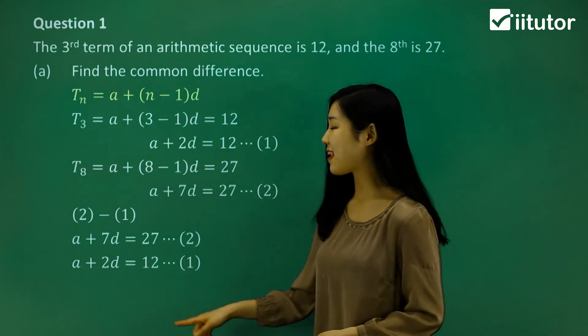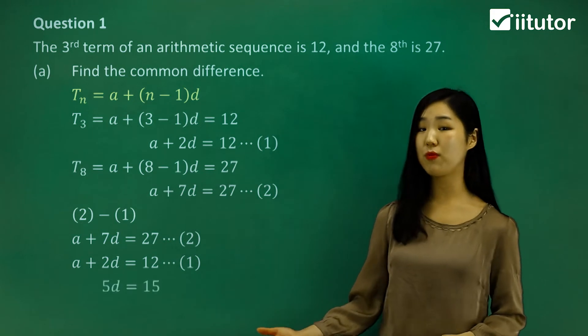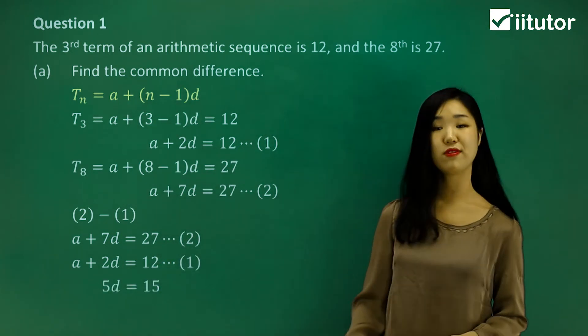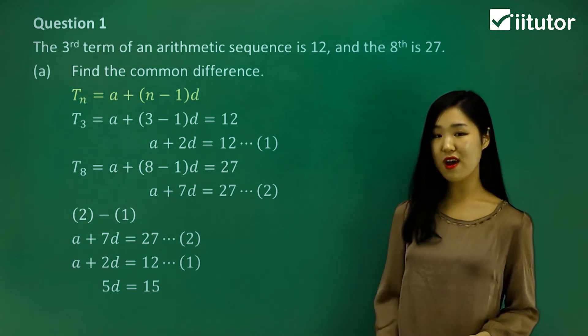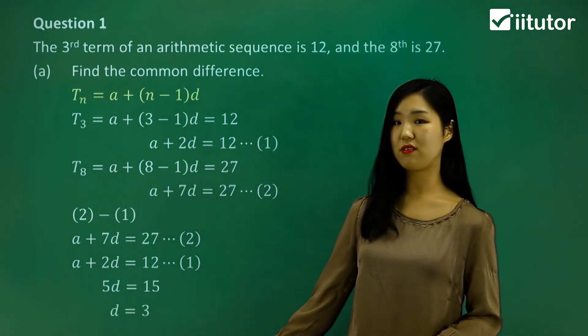Because we're subtracting, a should be canceled, and 7d minus 2d will be 5d, and 27 minus 12 will be 15. So what's d? Just divide both sides by 5 and you get d equals 3. So that was very simple. We found the difference.